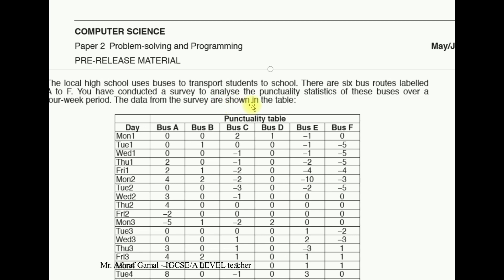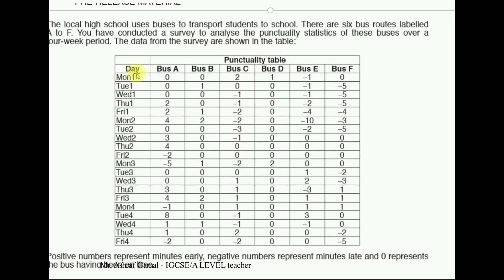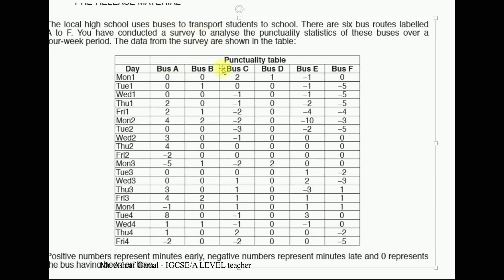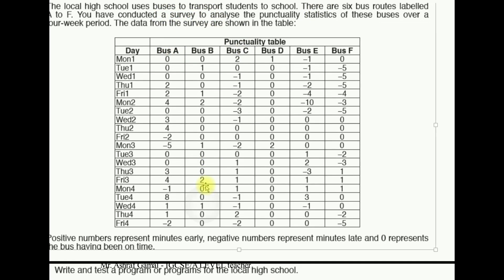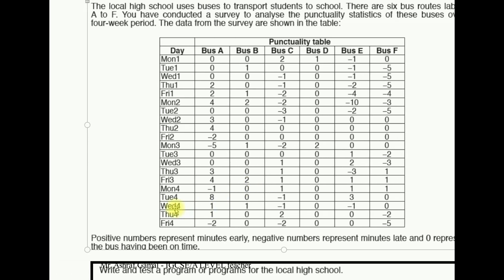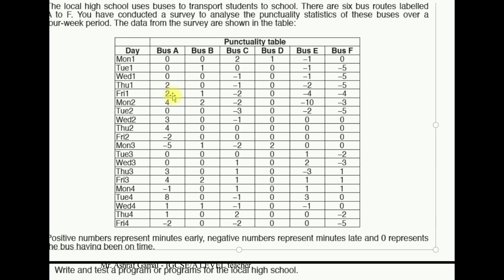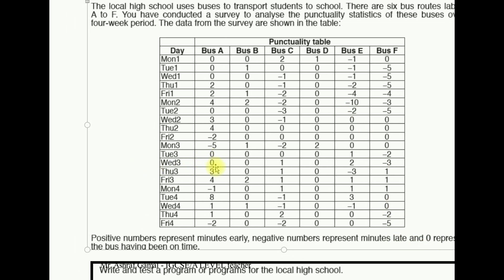The data from the survey are shown in a table where weeks are labeled by number — week 1, week 2, week 3, and week 4. For every bus route, positive numbers represent the minutes the bus arrived early. For example, 2, 4, 3, 3, 4 means the bus arrived early. Negative numbers represent minutes late — minus 1, minus 2, minus 4, minus 10 — and 0 represents the bus arriving on time.